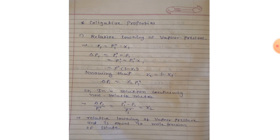These properties are colligative properties. Our first point is relative lowering of vapor pressure. According to Raoult's law, the lowering of vapor pressure depends only on the concentration of solute particles and is independent of their identity. The equation is: P1 = P0₁ × X1, where P1 is the partial vapor pressure of the solvent, X1 is the mole fraction of the solvent, and P0₁ is the vapor pressure of the pure solvent. The relation between vapor pressure and solution depends on both mole fraction and vapor pressure of the solvent.